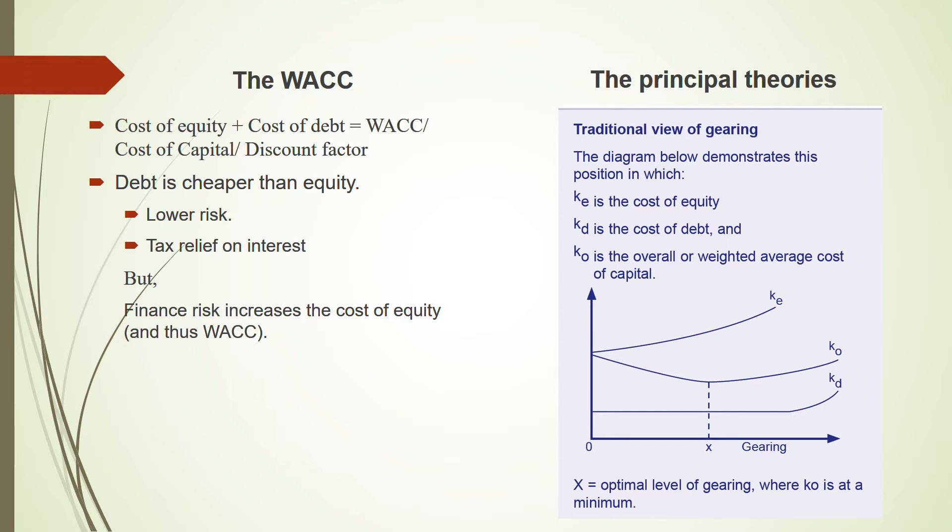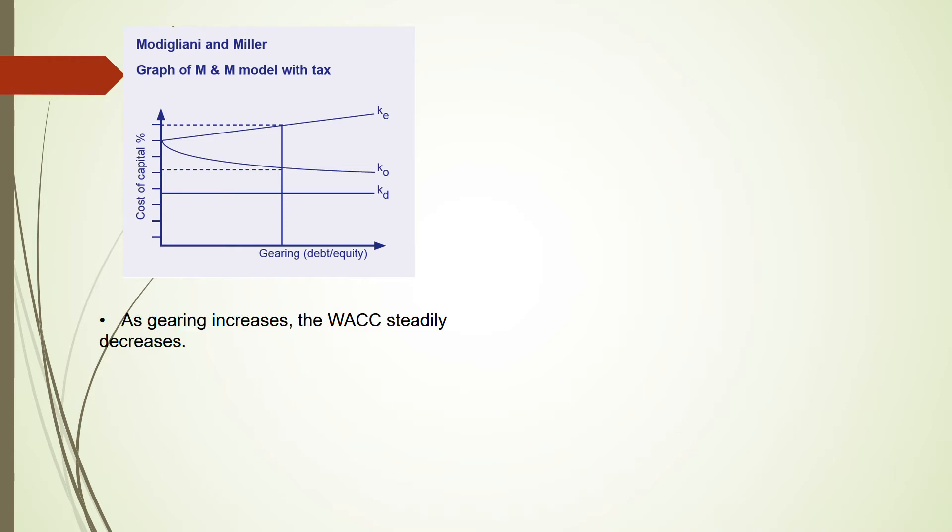Next, we have the Modigliani and Miller theory. The traditional view was without tax; MM is with tax incorporated into the cost of debt. If you look at the diagram, the cost of debt is a straight horizontal line — no matter how much debt you increase, cost of debt will not change. The only things that change are the cost of equity and WACC. Cost of equity increases, but WACC — K0 — falls steadily. As gearing increases, WACC decreases steadily.